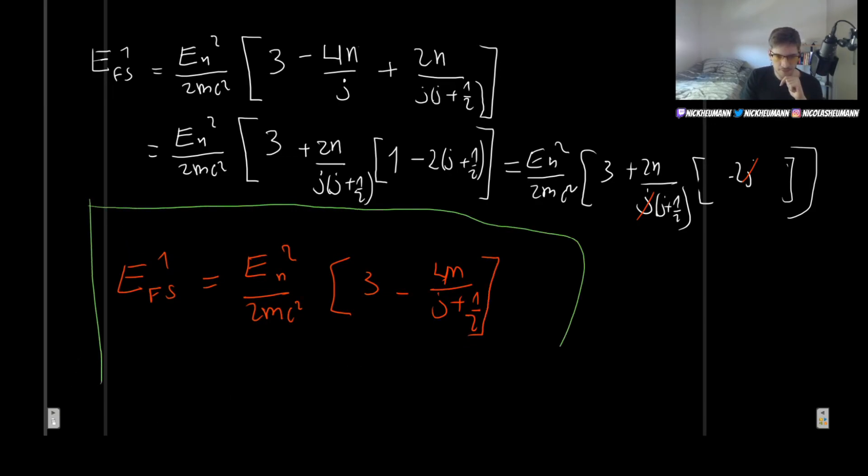Amazing. Take a look at this. So if you want to find the correction to, I don't know, maybe the orbital 4S or whatever, then all you have to do is plug here N equal 4 and then the corresponding value of J, which is going to be L plus S, right?